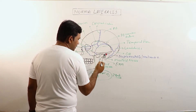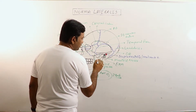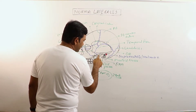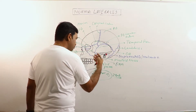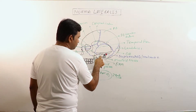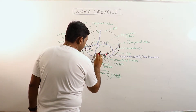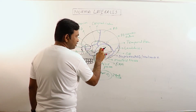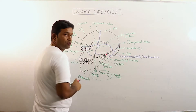The temporal fossa communicates with another fossa — the infratemporal fossa — which is just below the mandible and the zygomatic arch, in this region. The infratemporal fossa is behind or below the upper portion of the mandible and the zygomatic arch. It communicates with the temporal fossa by a gap deep to the zygomatic arch.